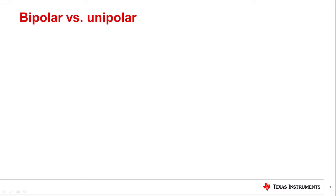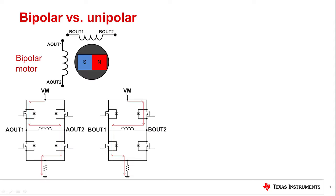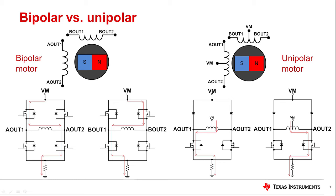Hybrid and permanent magnet stepper motors come in bipolar and unipolar winding configurations. For bipolar motors, H-bridges allow the current to flow in either direction through the winding, and the direction of the current determines the polarity of the magnetic field created by that winding. Unipolar motors only need low side or high side FETs to drive the current in one direction through the windings. The winding of a unipolar motor has a center tap that can be connected to ground or the motor supply. Rather than driving current in two directions, the coils for a particular phase are wound in opposite directions to achieve the change in magnetic field polarity needed to continue moving the rotor. Unipolar motors can be driven like bipolar motors if the center taps are left unconnected and the coils are connected to a bipolar stepper motor driver.